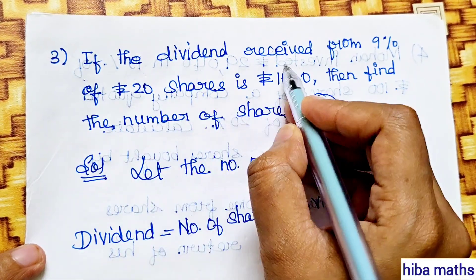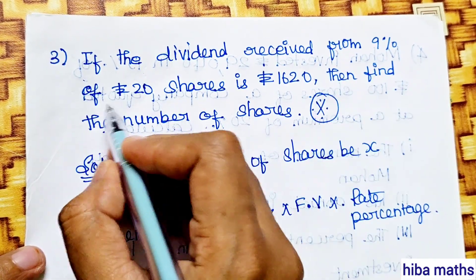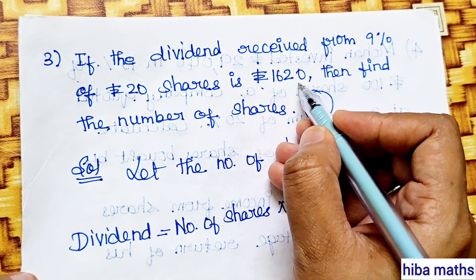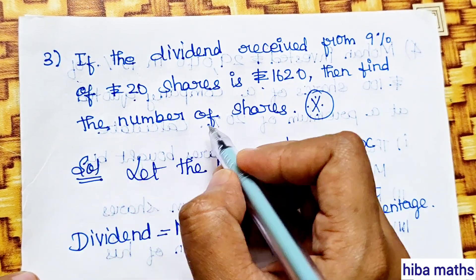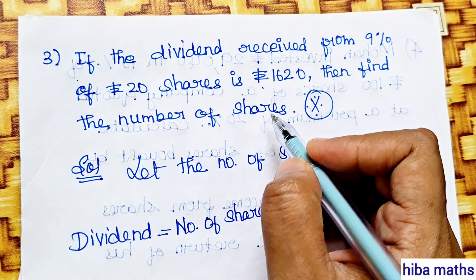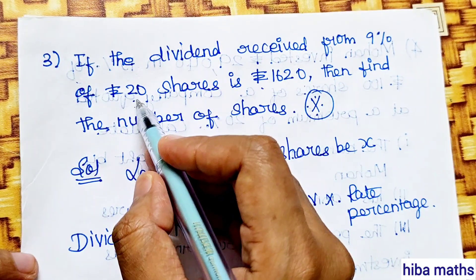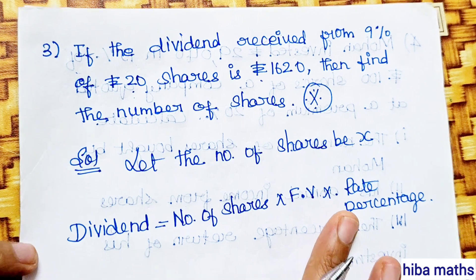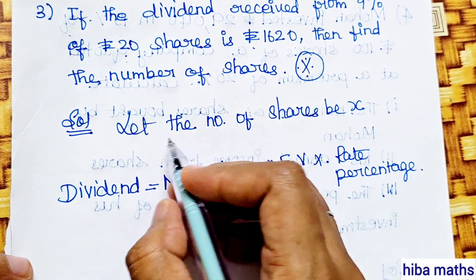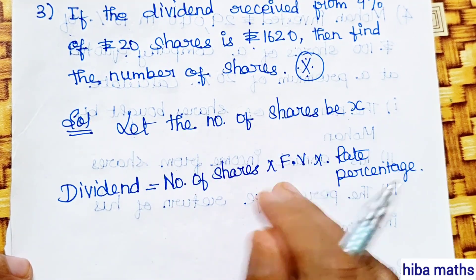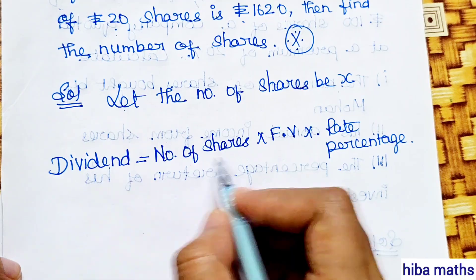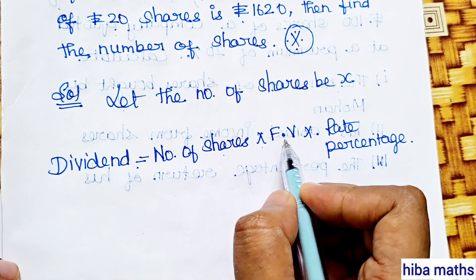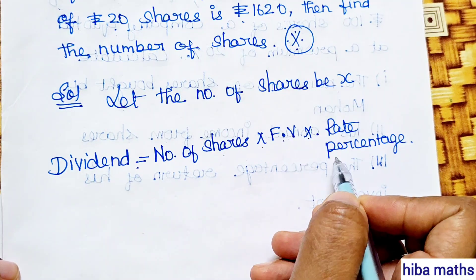Next question: if the dividend received from 9% of 20 shares is rupees 1620, find the number of shares. Let the number of shares be X. The formula is: dividend equals number of shares into face value into rate of percentage.